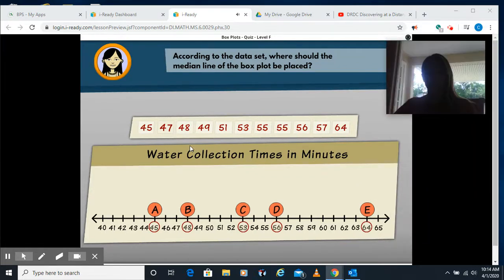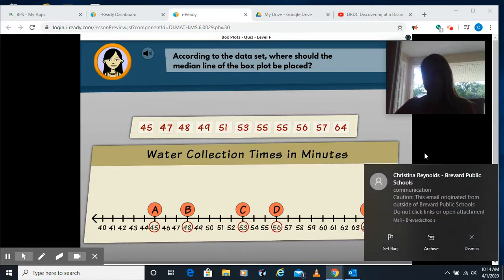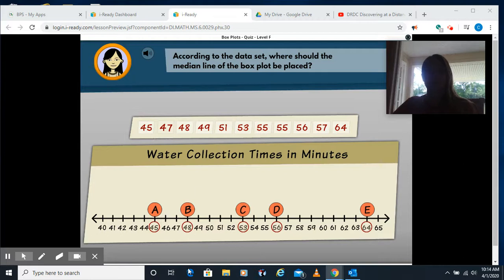All right, so it's asking us where the median of this data would go, and they already put it in order for us, which is key because we want the number that's in the middle, and the number in the middle in this case would be 53. Median is the one in the middle.